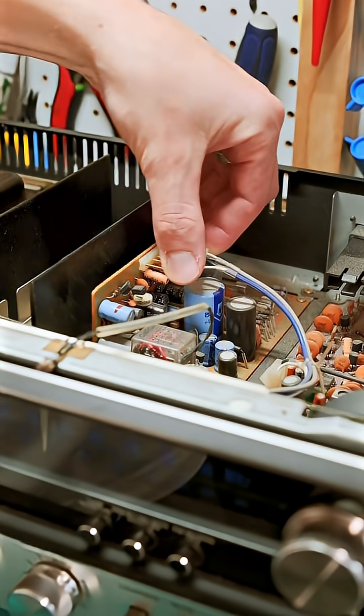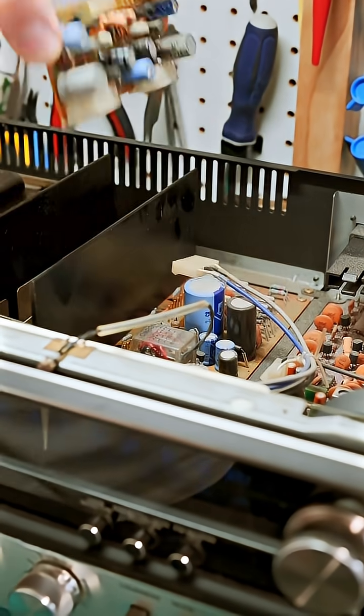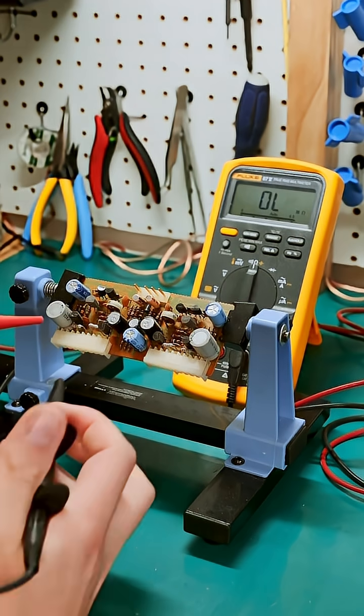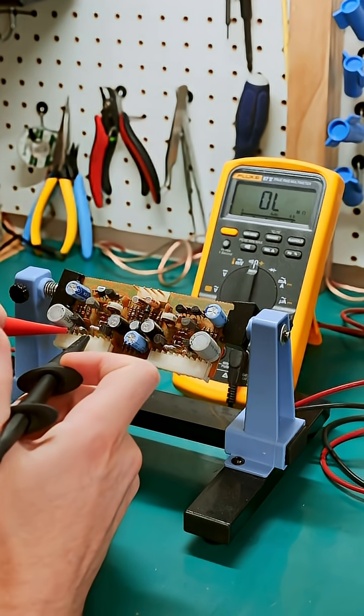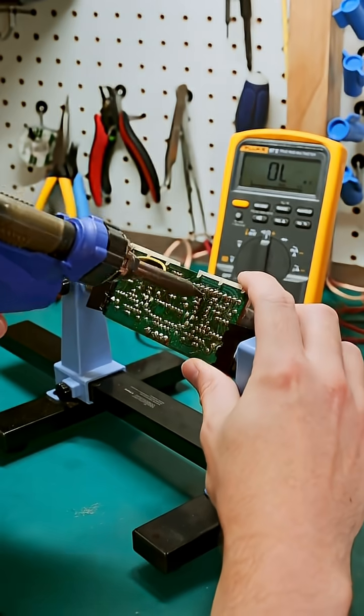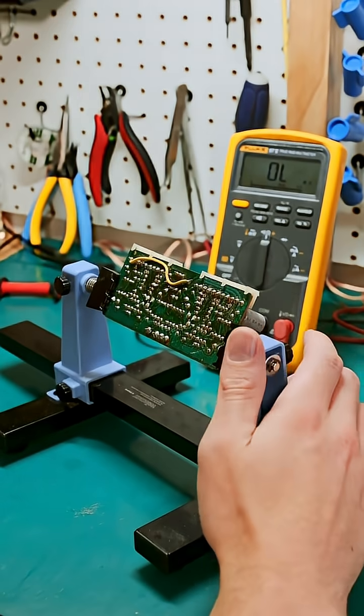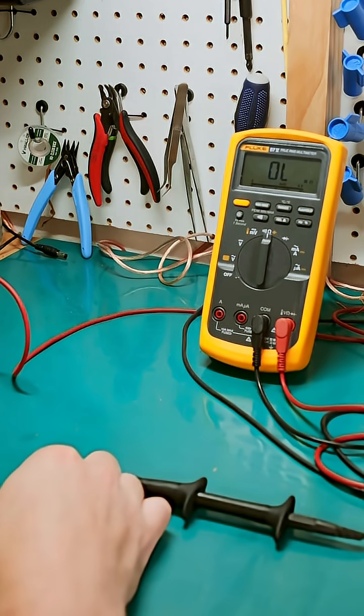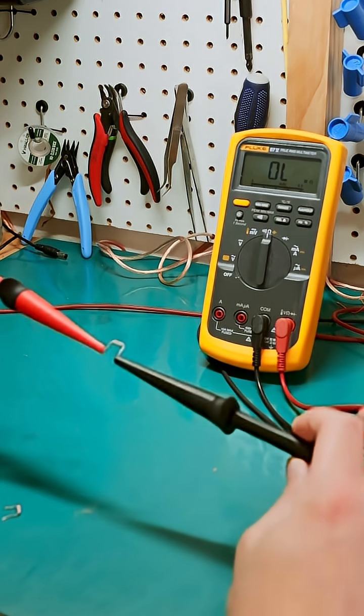All the fusibles on the other board tested reasonably fine. Let's see how these test. Testing them out of circuit is going to give me a more accurate idea of the values. It's 32k, that's in the left channel too, so that could totally be our problem. And this one actually tests fused, so this one's not even working. And this one's in the right channel.